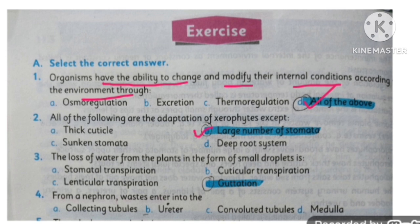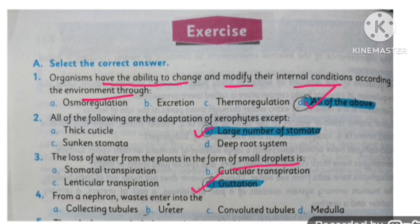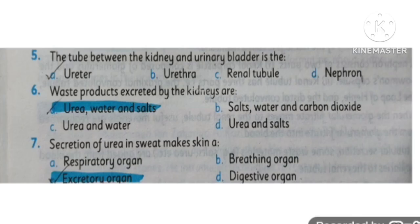MCQ number three: the loss of water from the plants in the form of small droplets is known as guttation. MCQ number four: from a nephron, waste enters into collecting tubules.